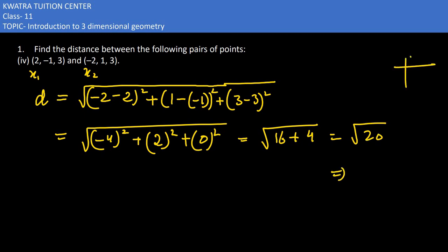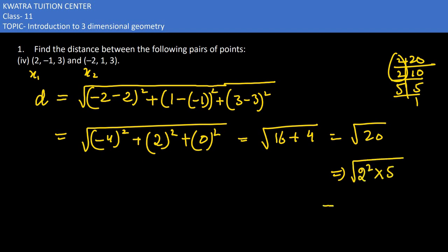We know that √20 can be written as 2√5. We can rewrite 20 as 2 squared into 5, so √(2² × 5). The root cancels the square, 2 comes out, giving us 2√5 units.